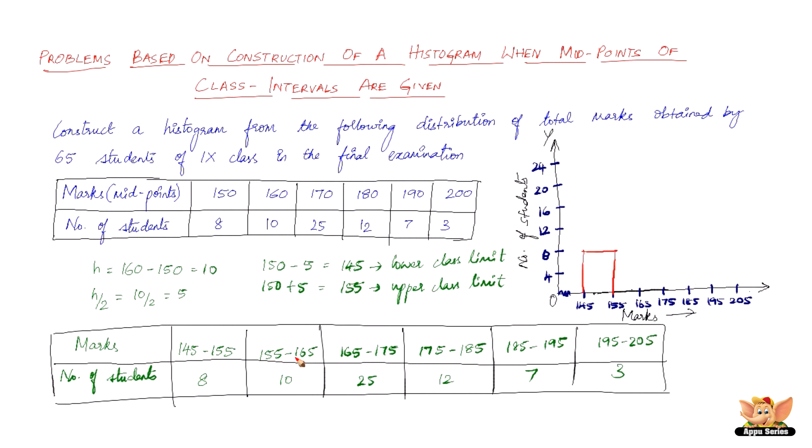First histogram is here. Second one, 155 to 165 is 10. So that is going to come somewhere in the middle like this. So here it is.